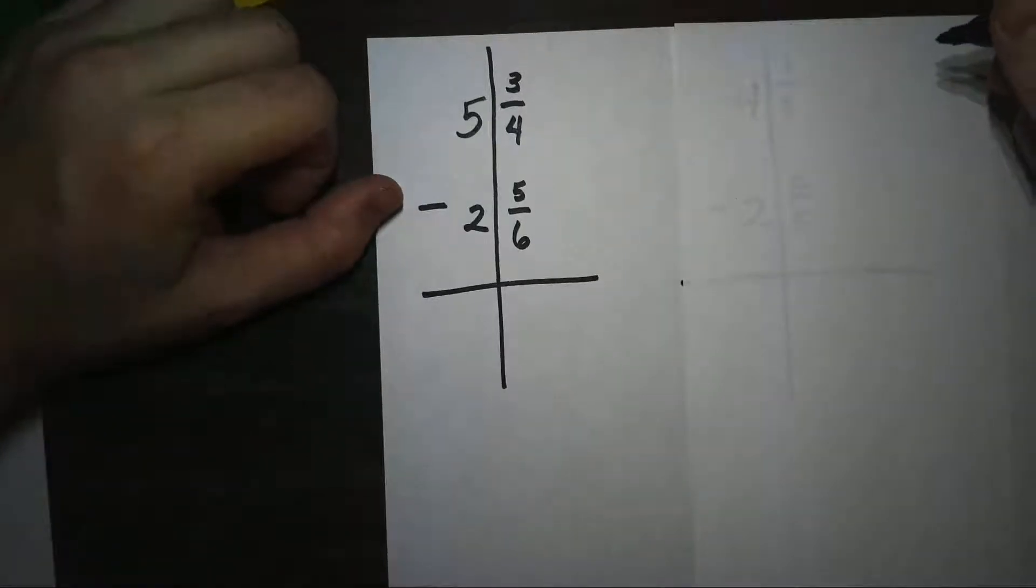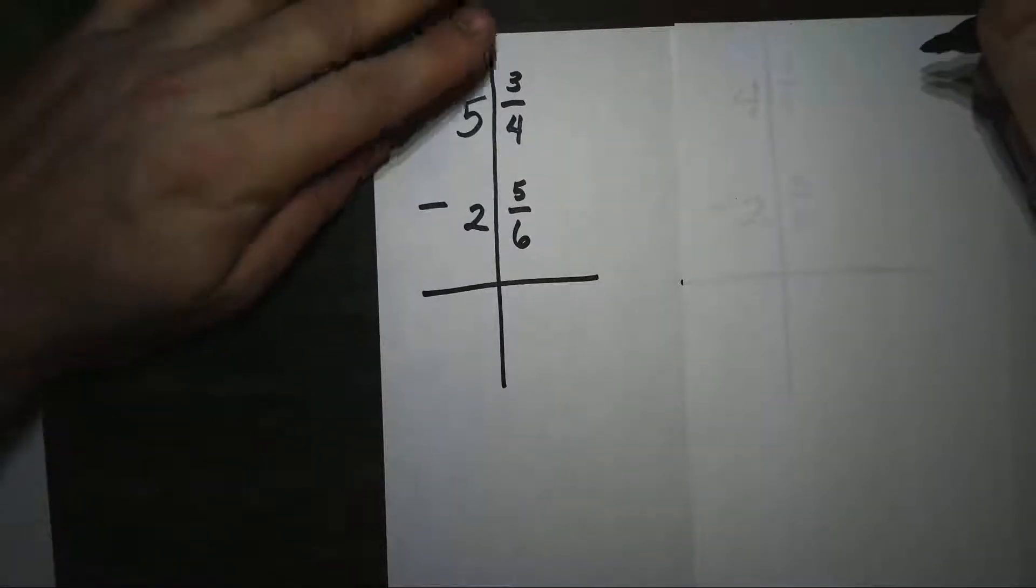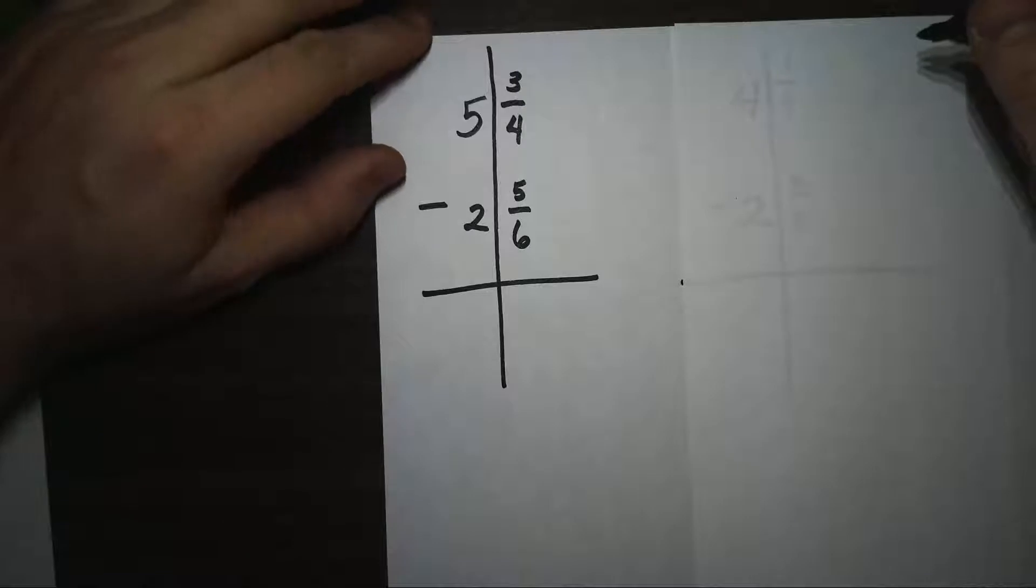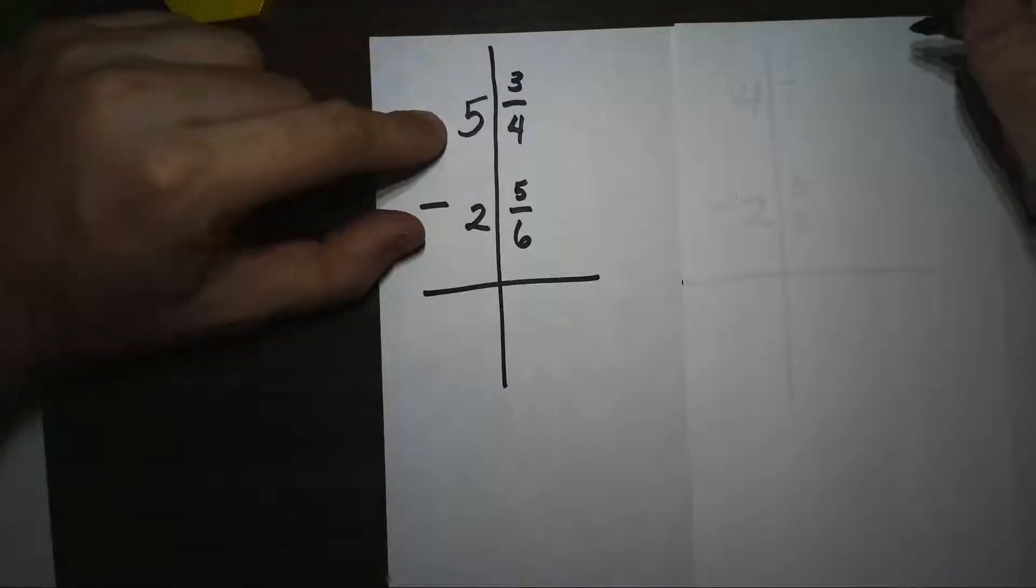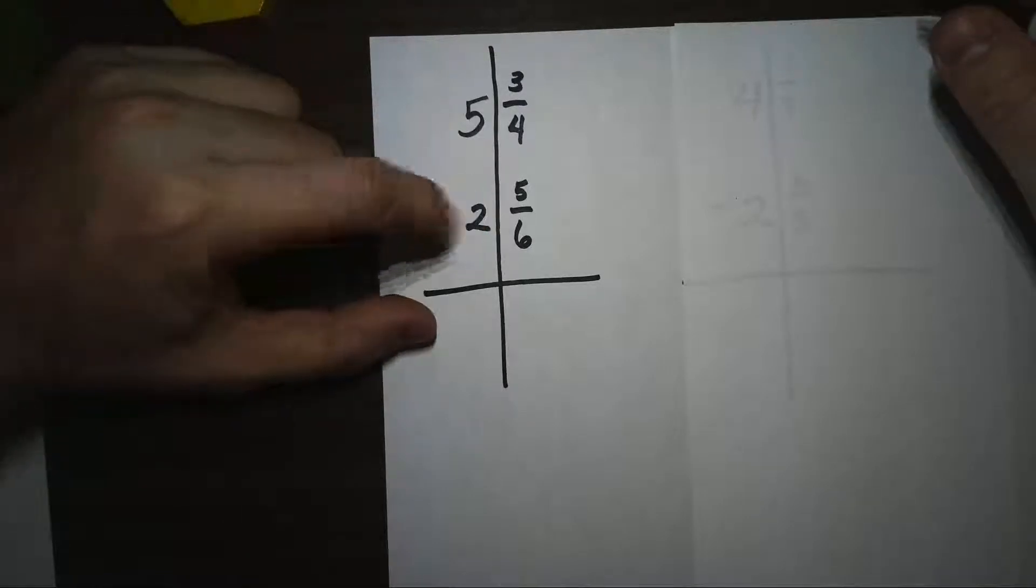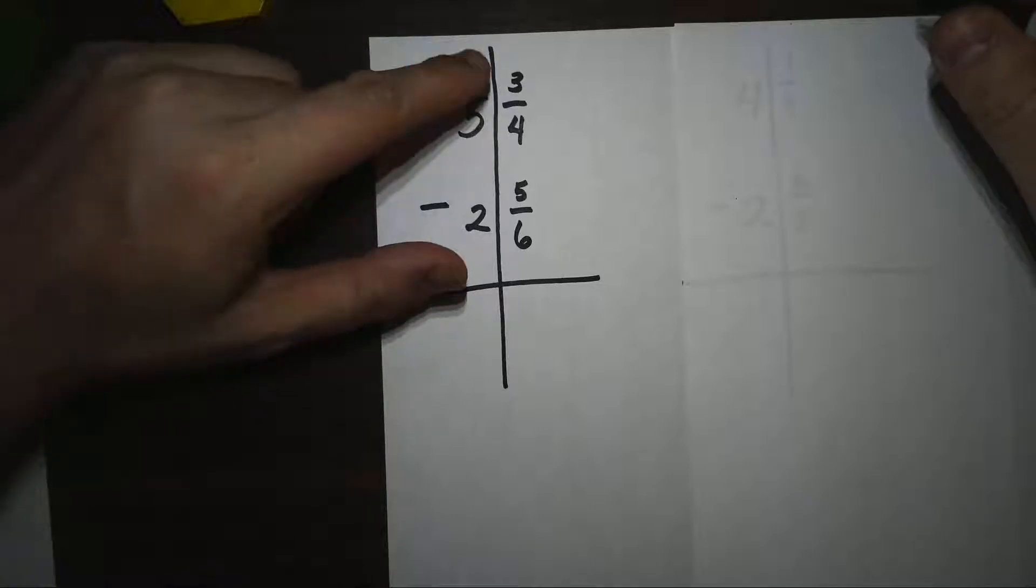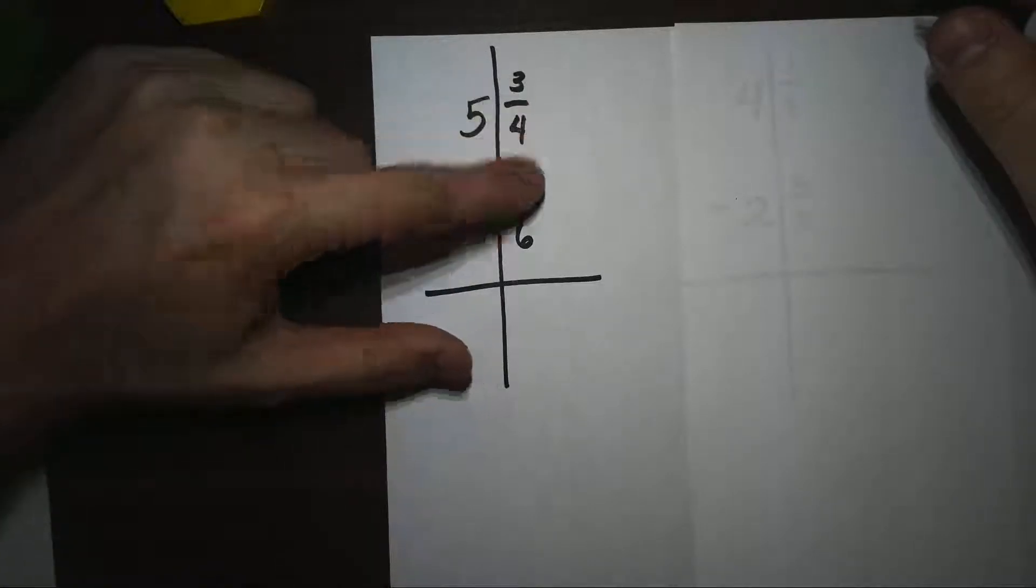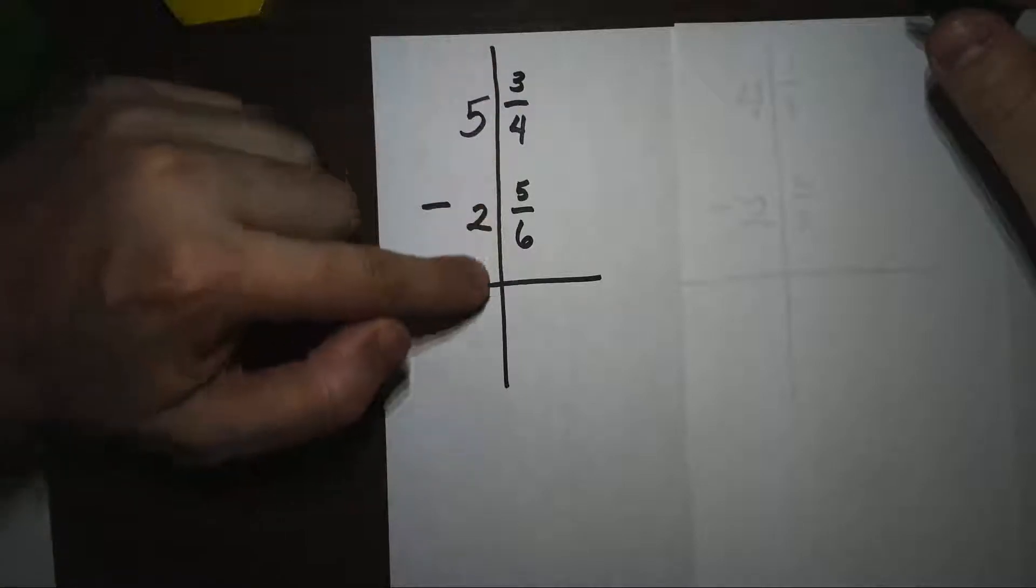Let's look at how we can do subtraction of mixed numbers that require regrouping without any models, just how we would do it on pencil and paper. This problem is 5 and 3/4 minus 2 and 5/6, and I've purposely split this up into a whole number category and a fraction category. This line you can think of as your decimal.